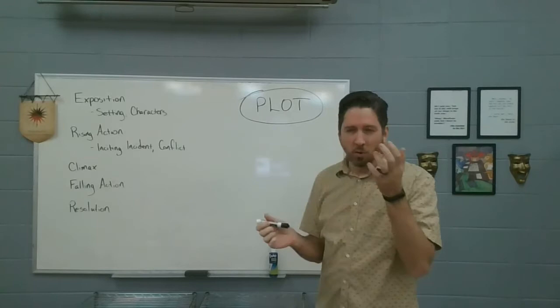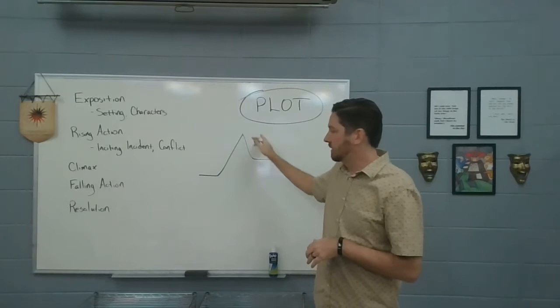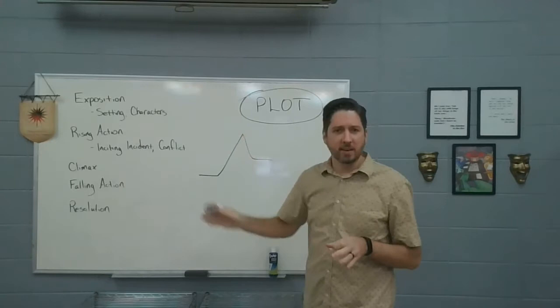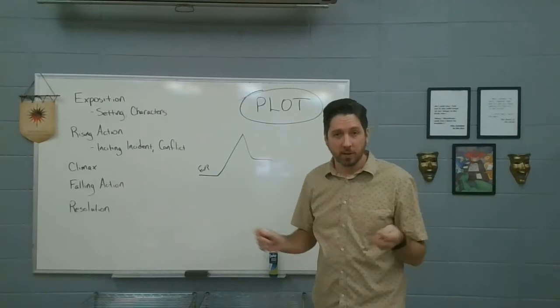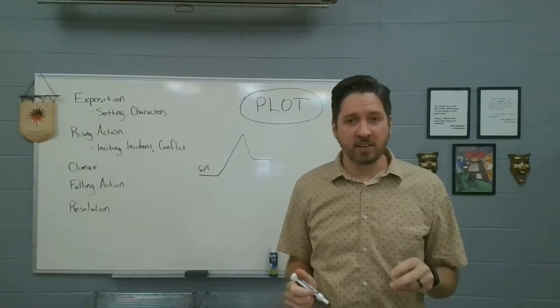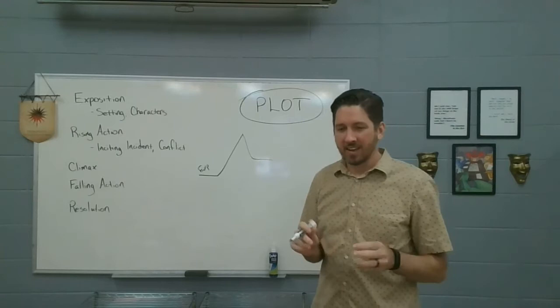You probably in middle school saw the full, they call it a Freytag diagram or plot diagram, for helping to analyze plot. And it's a good image to use and we'll get into details of what this plot mountain means as we're breaking these down. So the first one is exposition. Exposition is this beginning part of the story. And in the exposition, we are introduced to the setting and we're introduced to the main characters. There should not be any conflict in the exposition. It is just to expose the basics of the story, the who and the where. It gets you grounded in the story before we get into any conflict.